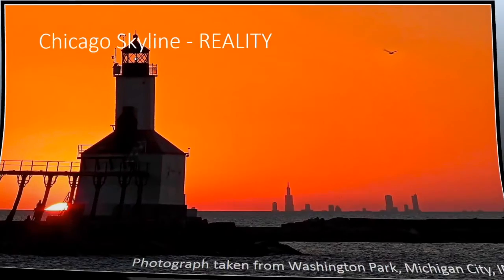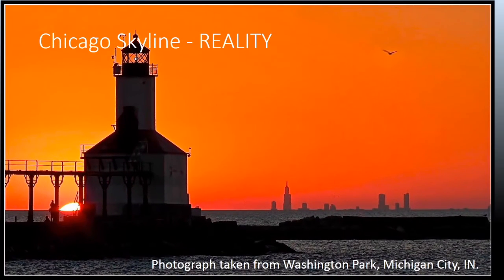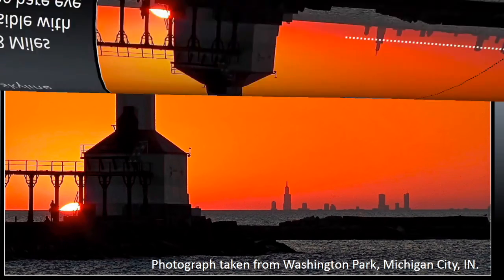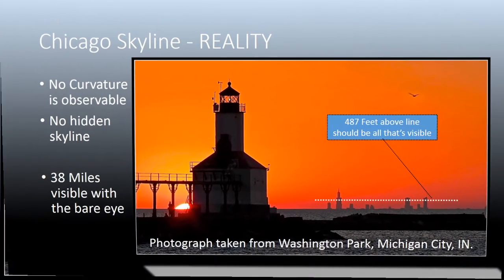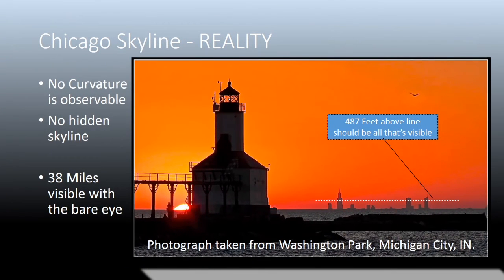Yet another photograph here of the Chicago skyline. Part of those buildings you should not be able to see, but clearly you can see most of them. Below that white line, you should not be able to see any buildings — but in fact, you can.